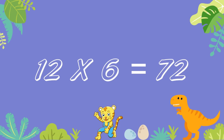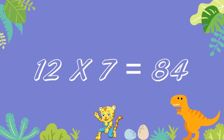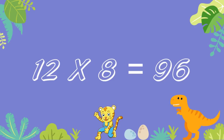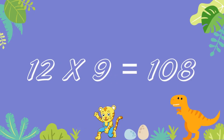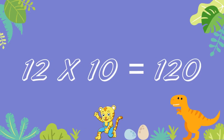12 sixes are 72. 12 sevens are 84. 12 eights are 96. 12 nines are 108. 12 tens are 120.